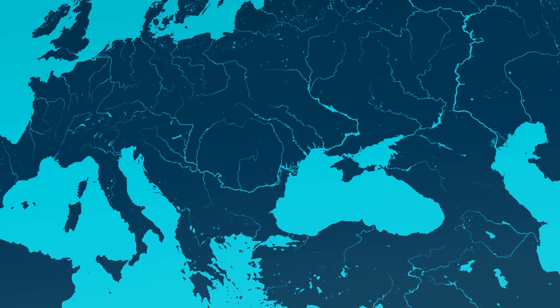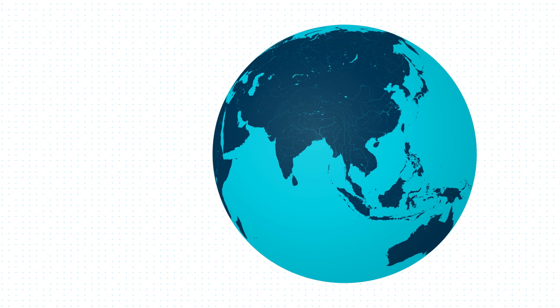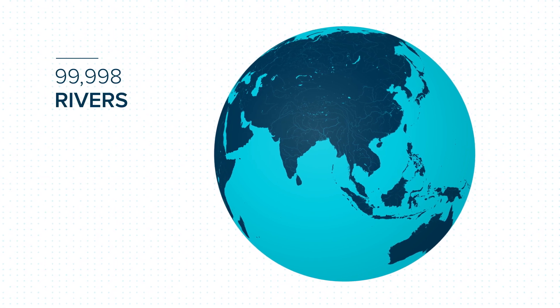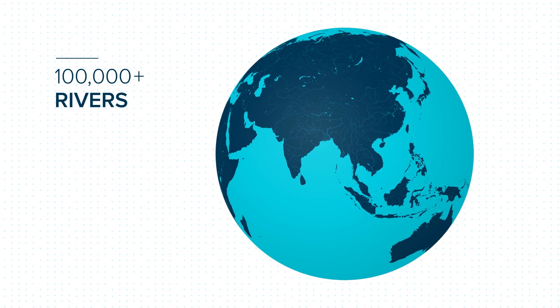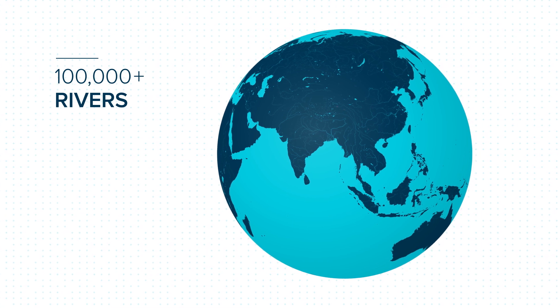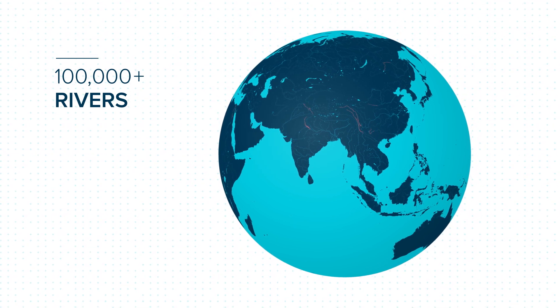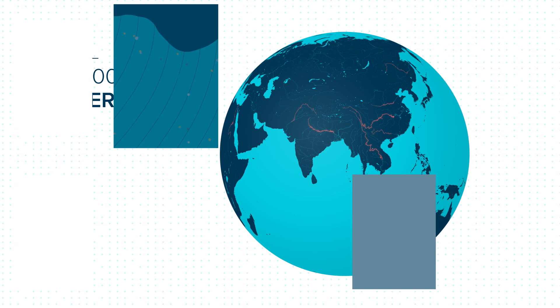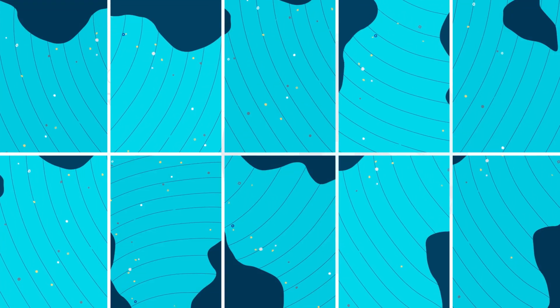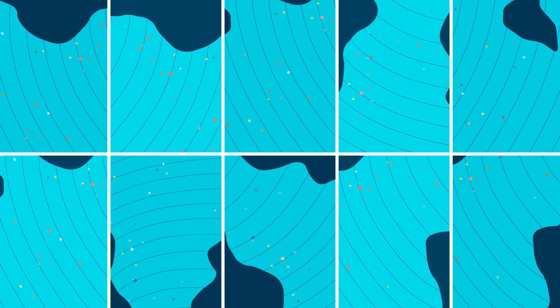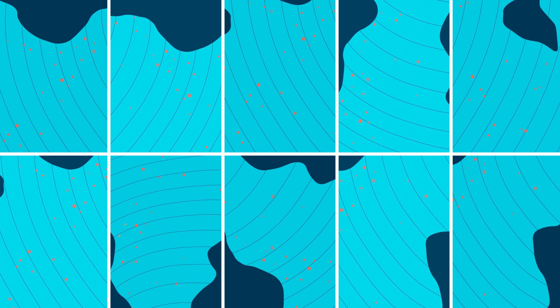There are more than 100,000 rivers on our planet, but not all of them contribute equally to the problem. Early efforts to map river plastic by many research groups, including the Ocean Cleanup, concluded that only a very small number of large rivers, perhaps as little as 10, are responsible for most of the pollution.